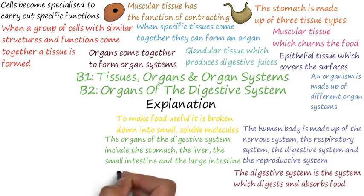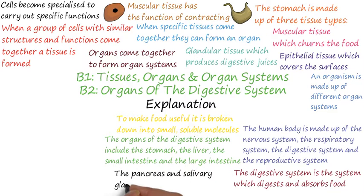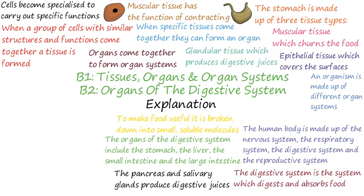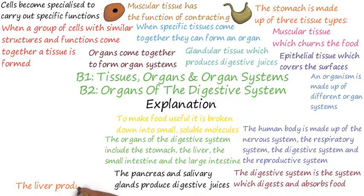The organs of the digestive system include the stomach, the liver, the small intestine and the large intestine. There are also glands such as the pancreas and salivary glands which produce digestive juices. These digestive juices contain enzymes to break down the food. The liver produces bile which helps to digest the lipids.